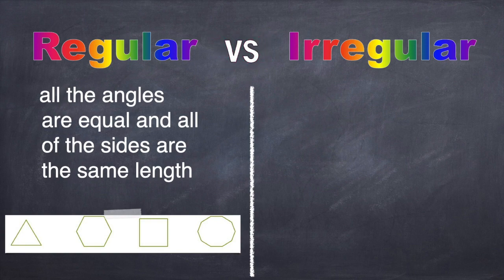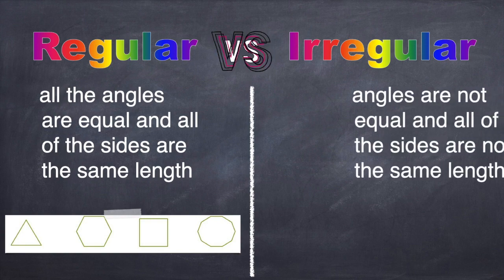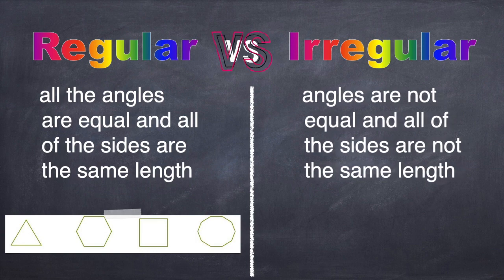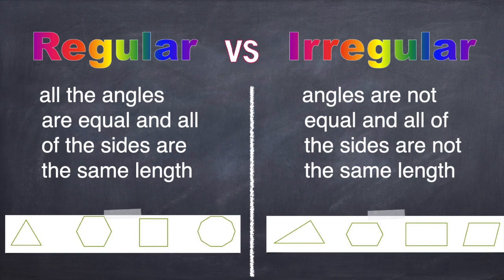The opposite of regular is irregular. So that means that an irregular polygon has angles that are not all equal and sides that are not the same length. They look something like this. Regular, irregular.